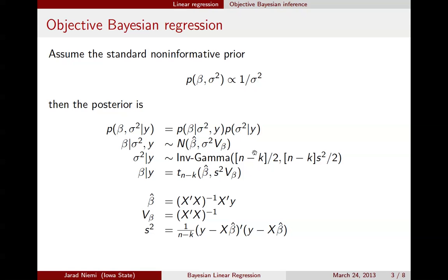And s squared is just our standard estimator for sigma squared. So for those who haven't seen it before, when you see it later, you should check to make sure that these are, in fact, the ordinary least squares and maximum likelihood estimators.